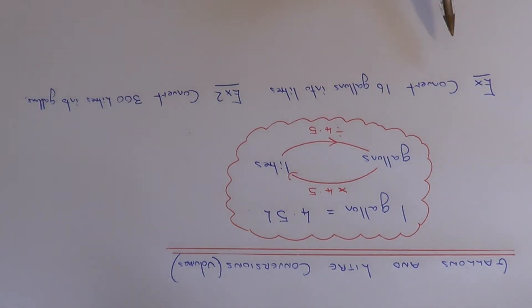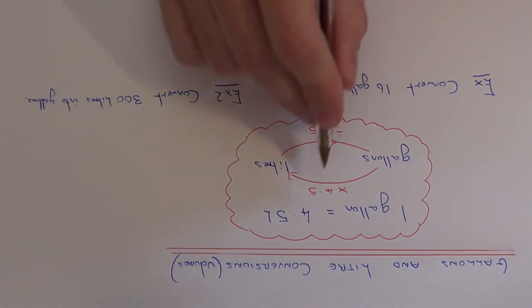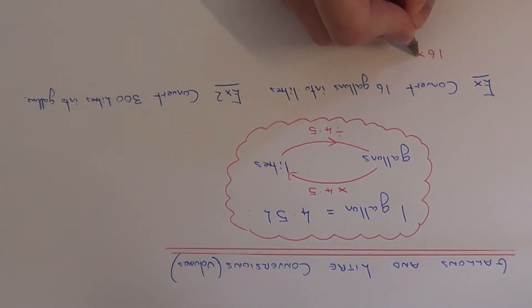So let's look at the two examples here. The first example, we need to convert 16 gallons into litres. So gallons into litres, we need to multiply by 4.5.